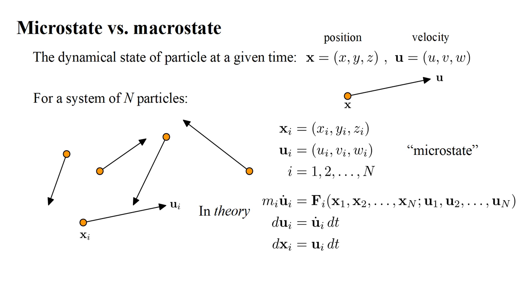Then, assuming we have a model for how the particles interact with each other, and the walls of the gas container, we can calculate the force on the ith particle as a function of the positions and velocities of all the particles. By Newton's second law of motion, this gives us the ith particle's mass times acceleration, denoted by ui dot. Acceleration is the rate of change of velocity, so multiplying it by a small time increment dt gives us the change of velocity, dui, and velocity is the rate of change of position, dxi.